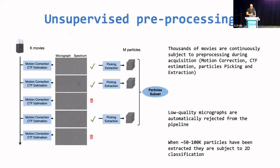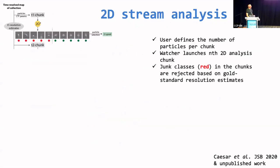This unsupervised preprocessing platform is robust and has been running now for three years at the NCI. Basically everyone using the EM platform is using this motion correction and CTF estimation. We continuously process thousands of micrographs, and low-quality micrographs are automatically rejected from the pipeline based on estimated Thon ring extension. We also have an ice score that takes care of too much ice. From picking and extraction, we end up with particle stacks, and then we have the 2D stream analysis.